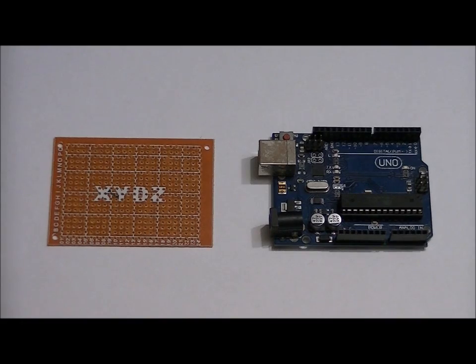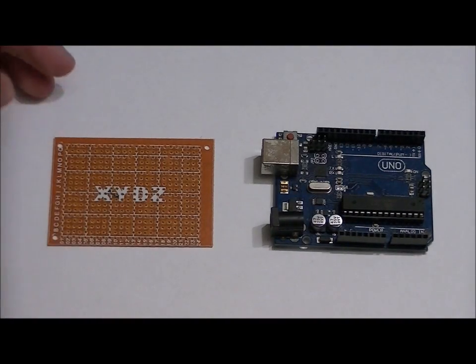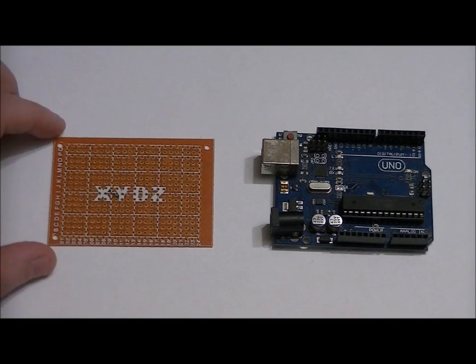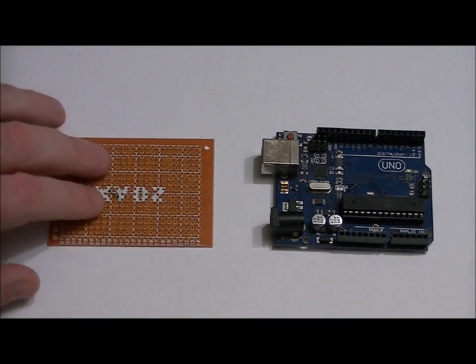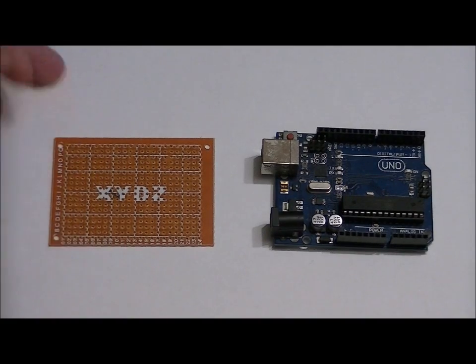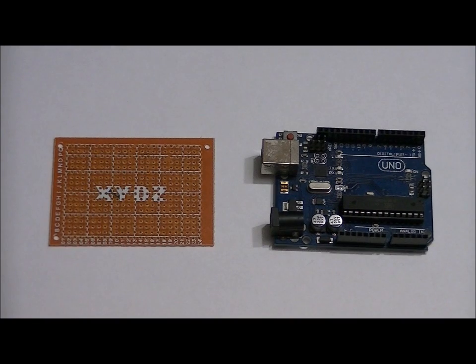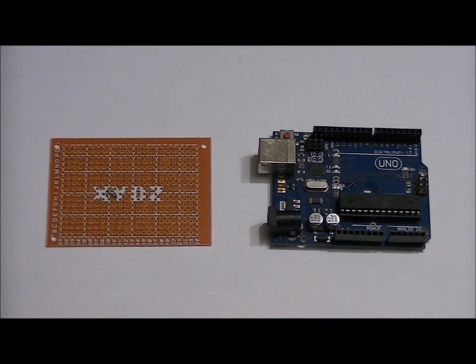Today we're going to talk about the schematic of what's needed from here to bring over here, and tomorrow I'm going to release the second video which will show me populating this board and testing it. For this project we're just going to upload the basic Blink software under examples in your Arduino Uno GUI. But first things first, let's have a look at the schematic.